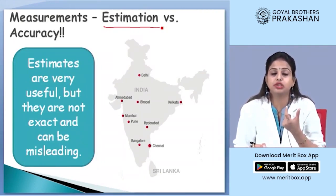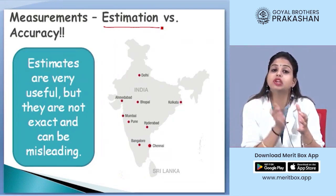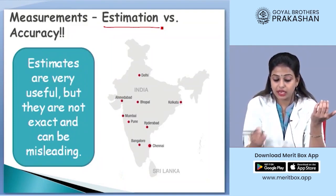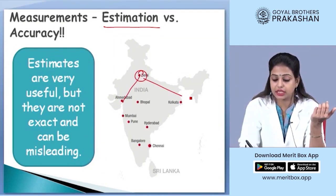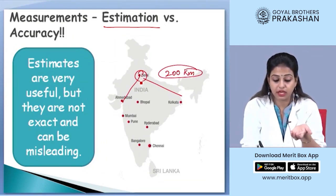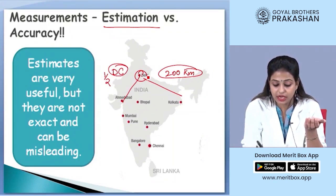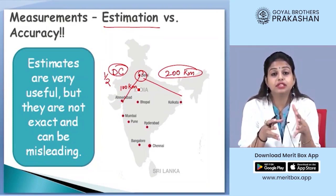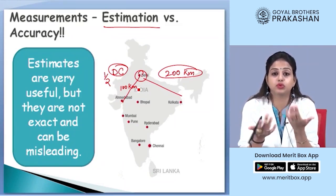In physics, estimation can be very misleading because when you are doing calculations and your values are not accurate but estimated, there is a very big probability that things may go very wrong. For example, if we estimated Delhi to Kolkata as 200 kilometers and Delhi to Ahmedabad as half of that — 100 kilometers — that estimation would not give an accurate answer. To be more accurate, we use specific tools in physics, which we are going to learn about in this session.